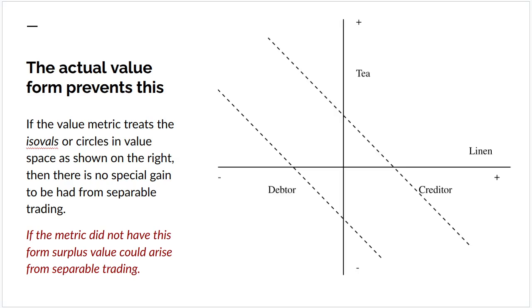The actual form of the metric space of value prevents this happening. It treats the isovalues or points of equal value or circles in value space as parallel lines as shown to the right here. And it's a property of these that separable trading will not give you any surplus.